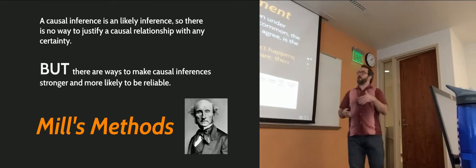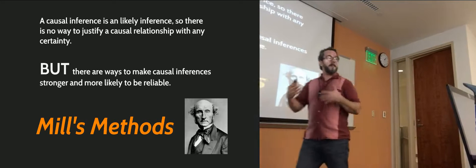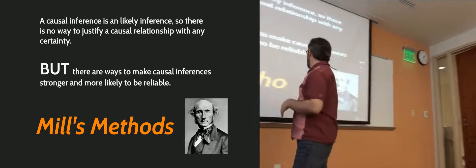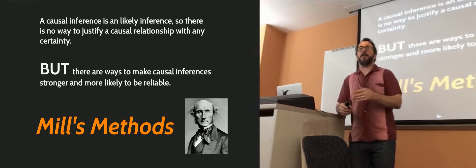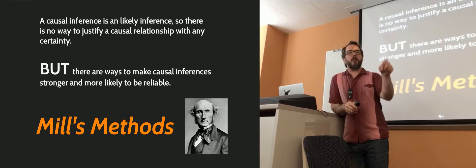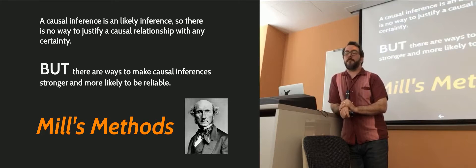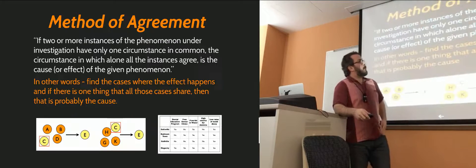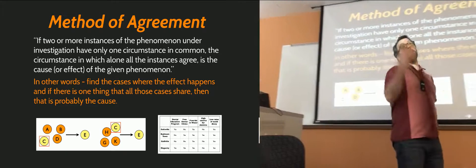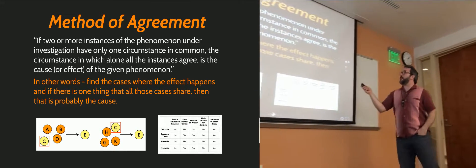So we're back to this question: how can we do this well? What is it that makes causal inferences stronger, more likely to be reliable? And we go to what are known as Mill's methods. There are several different methods that Mill articulates and says these are all methods we can apply to determine whether or not a causal inference seems to be a justified one.